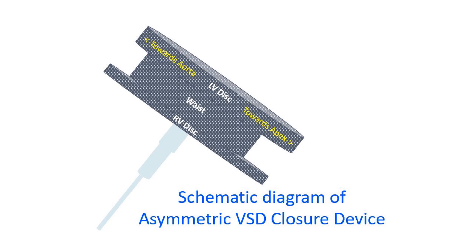The asymmetric VSD closure device is made of nitinol mesh covered with Dacron fabric to facilitate thrombogenesis, so that the final occlusion of the defect is by thrombus formation in the mesh.